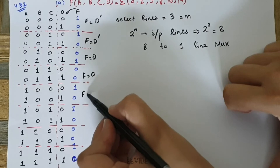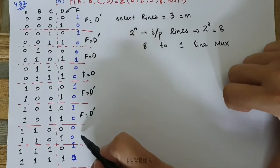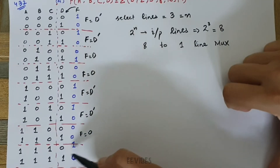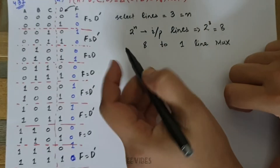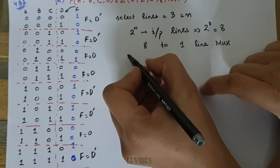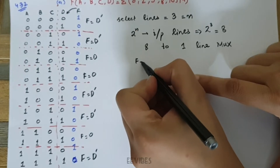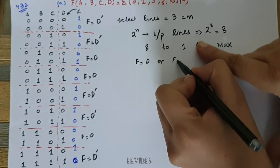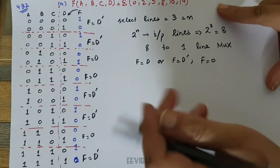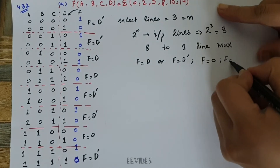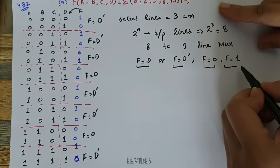Continuing: F is equal to D complement, F is equal to D complement, F is equal to 0, and F is equal to D complement for the remaining groups. The function can take four possible forms in terms of the last variable: F equals D, F equals D complement, F equals 0, or F equals 1.